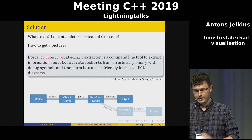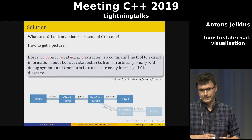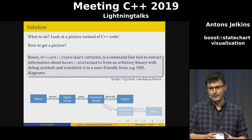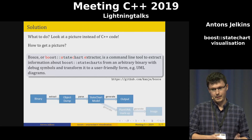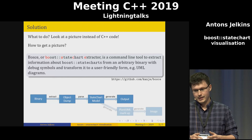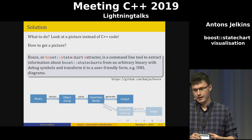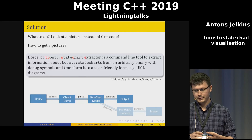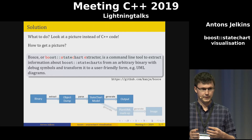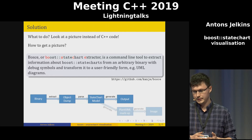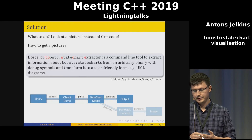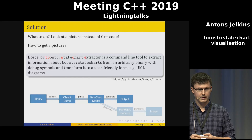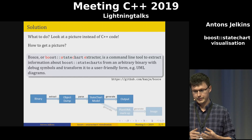Here is how it works: it takes a binary, extracts the objdump, parses the objdump, and has a state chart module inside. From that module it can generate different outputs. One of the outputs is PlantUML markup, and you can use that with PlantUML to generate a picture.